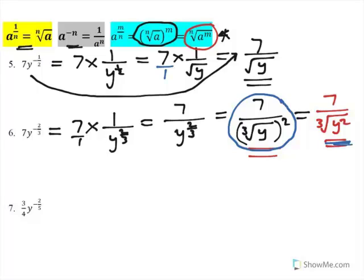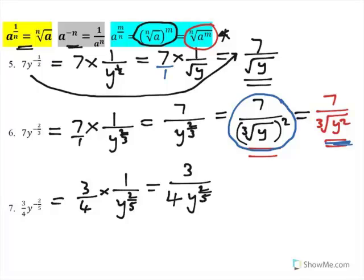This next one, it's 3 quarters times 1 over y to the power of 2 fifths. So, it's similar to the last one. I'll multiply the top first and multiply the bottom. So, 3 times 1 is 3, and 4 times y to the power of 2 fifths is 4y to the power of 2 fifths.